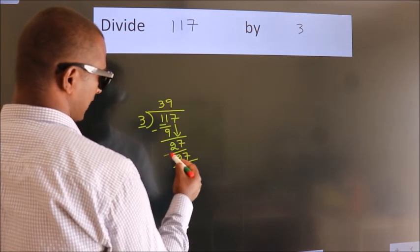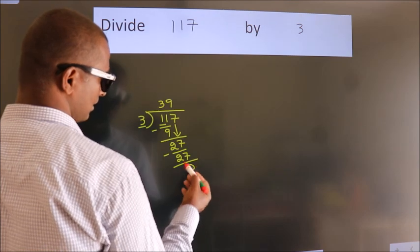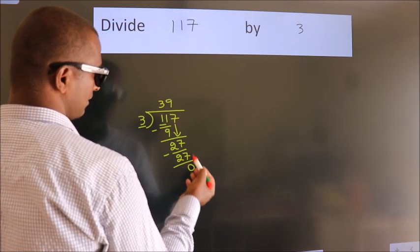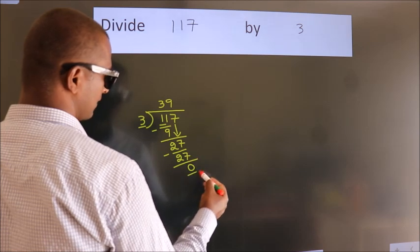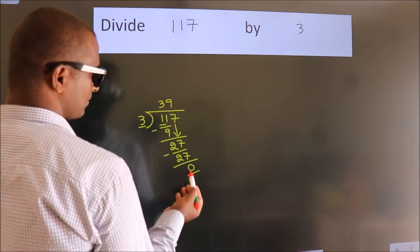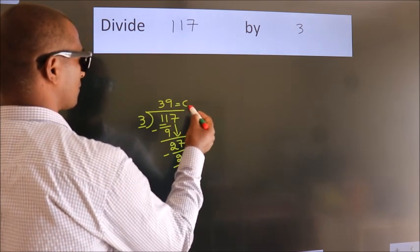Now we subtract. We get 0. After this, no more numbers to bring it down. And we got remainder 0. So this is our quotient.